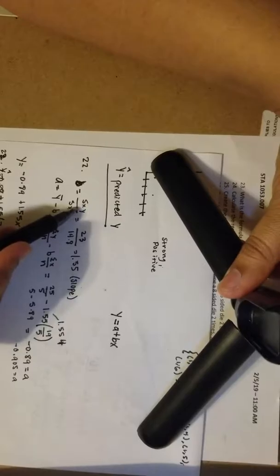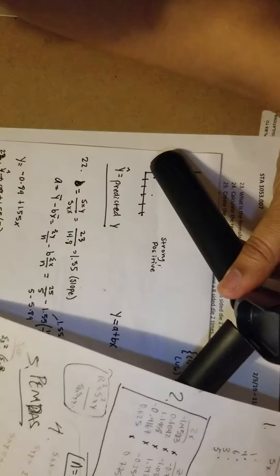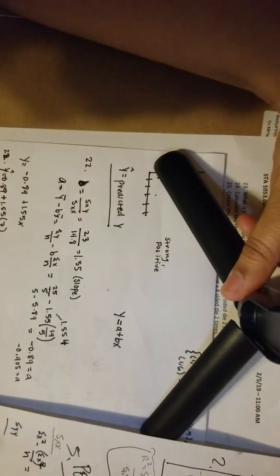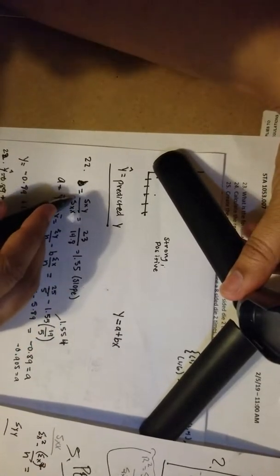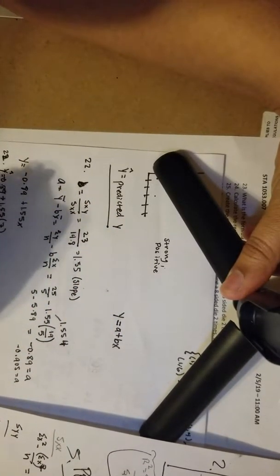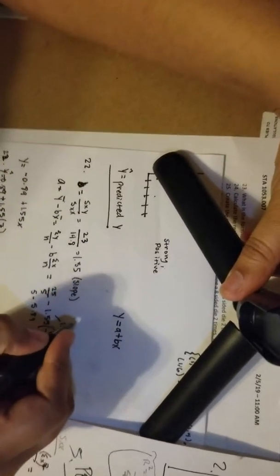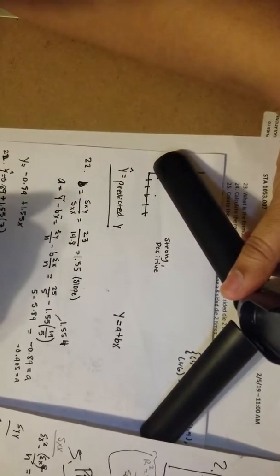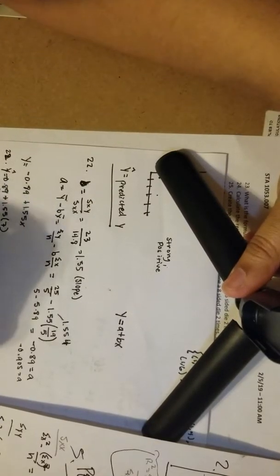Which is sxy, which we already calculated early, so that's good. We calculated sxy in the last problem to be 23, and sxx to be 14.8. Simply, we just have to divide it here and we get 1.55, and we know b is a slope, so 1.55 is a slope. That was really easy simply because we did all that work before.